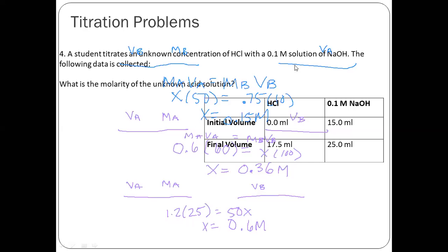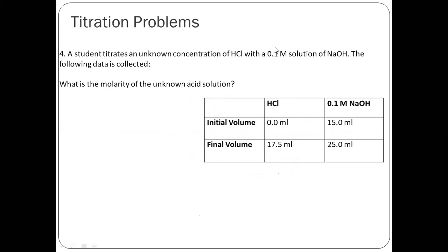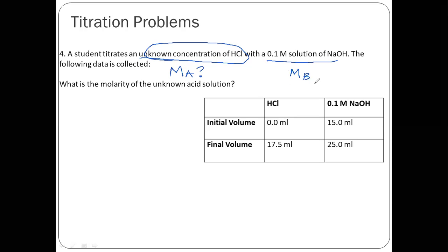So you might've had some questions on number four. So this is data that you would actually see if you were doing a lab. So when we do our virtual lab on this, you will see a data table like this. So it says a student titrates an unknown concentration of HCl. So that means we do not know MA with 0.1 molar solution of NaOH. So there's your MB. So sometimes people don't read the top part, and then you'll miss the MB.